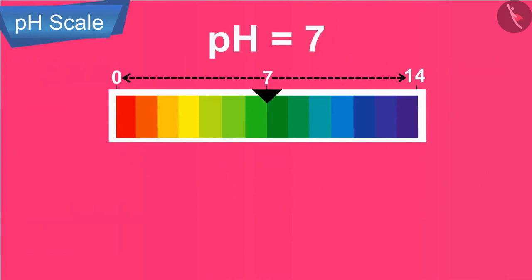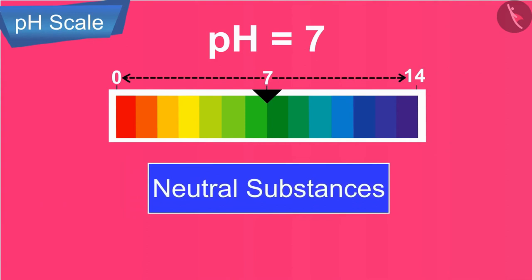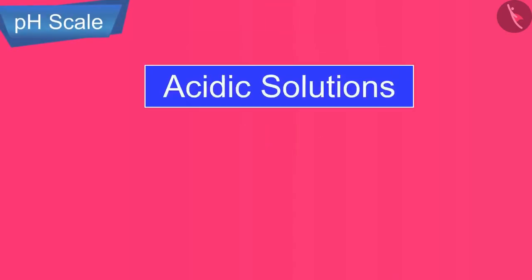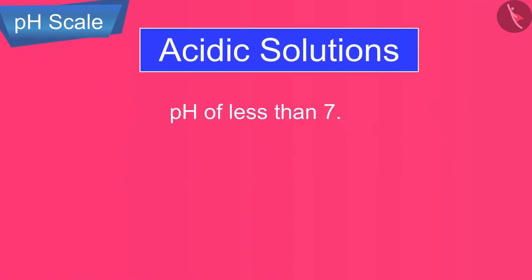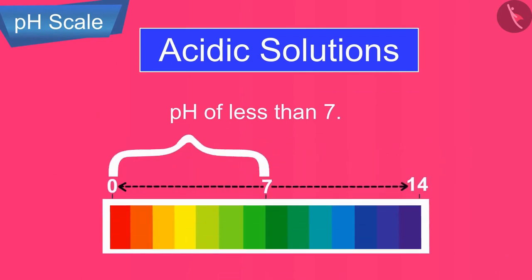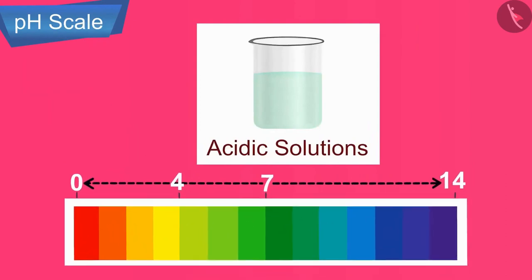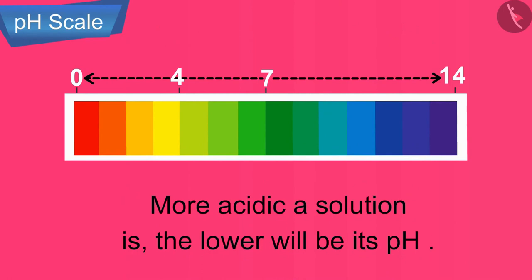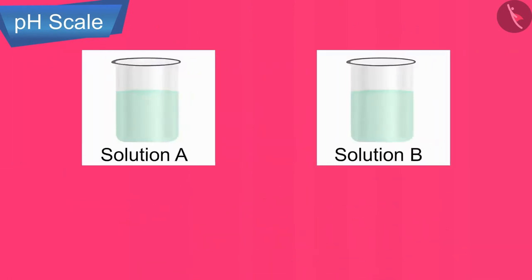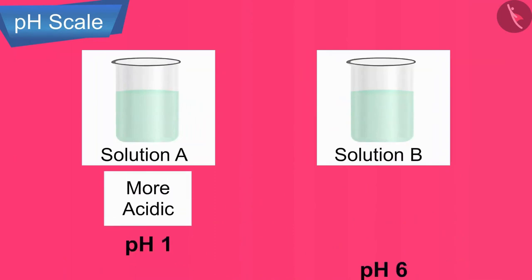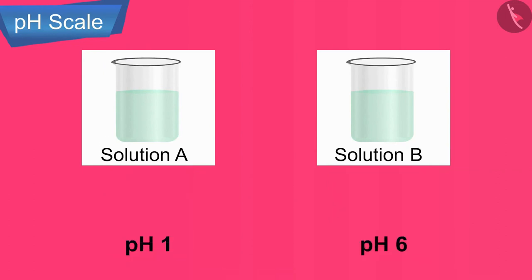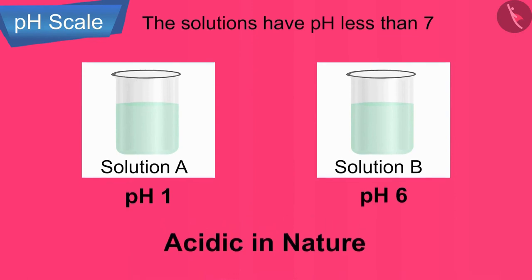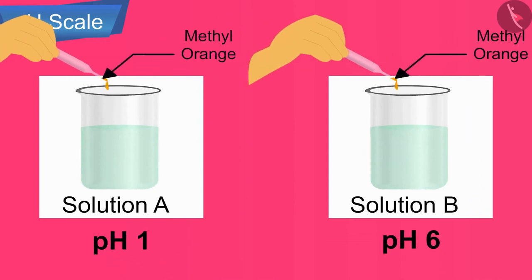Neutral substances with pH equal to 7 have no effect on indicators like methyl orange or phenolphthalein. Acidic solutions have a pH of less than 7 — for example, a solution having a pH of 4 is acidic. The more acidic a solution is, the lower will be its pH. A solution of pH 1 is much more acidic than an acid having pH 6. All solutions with pH less than 7 are acidic and turn blue litmus red and methyl orange indicator red.